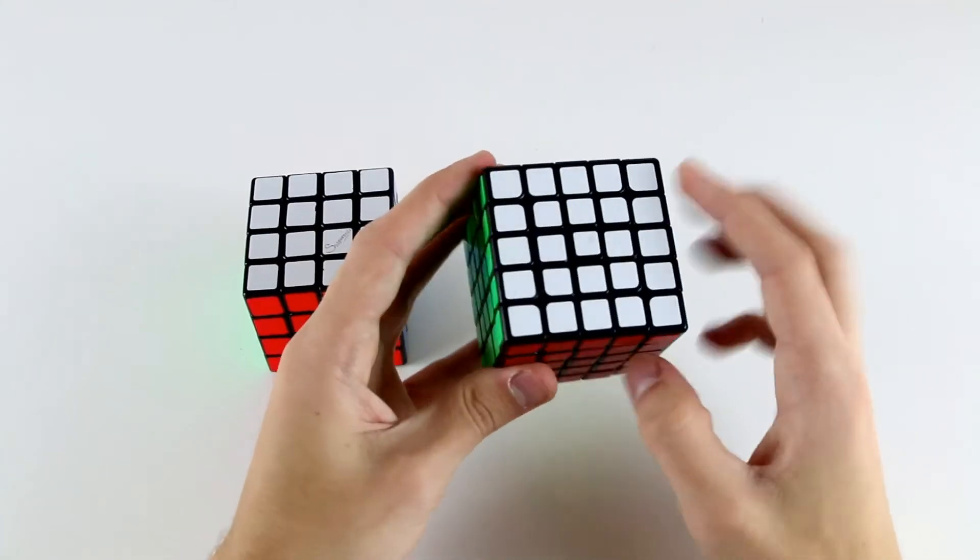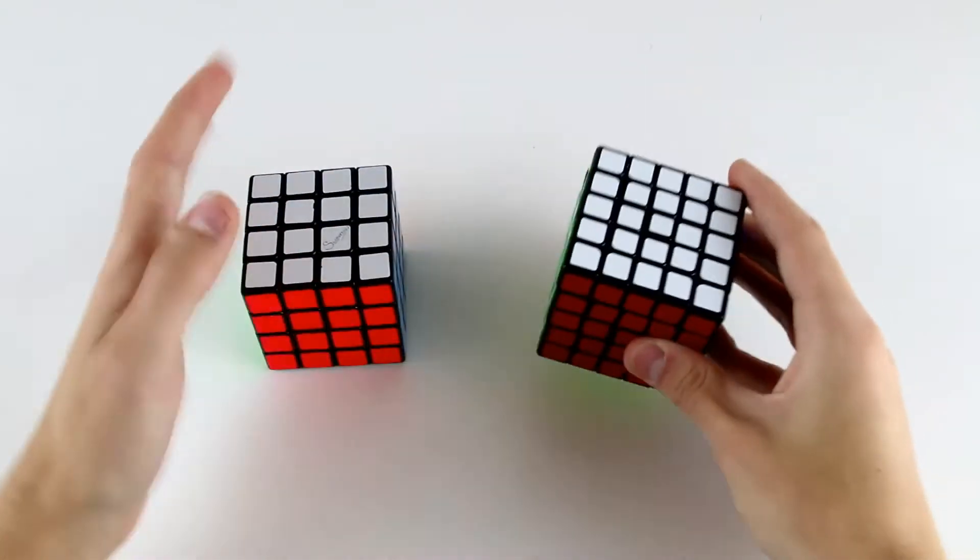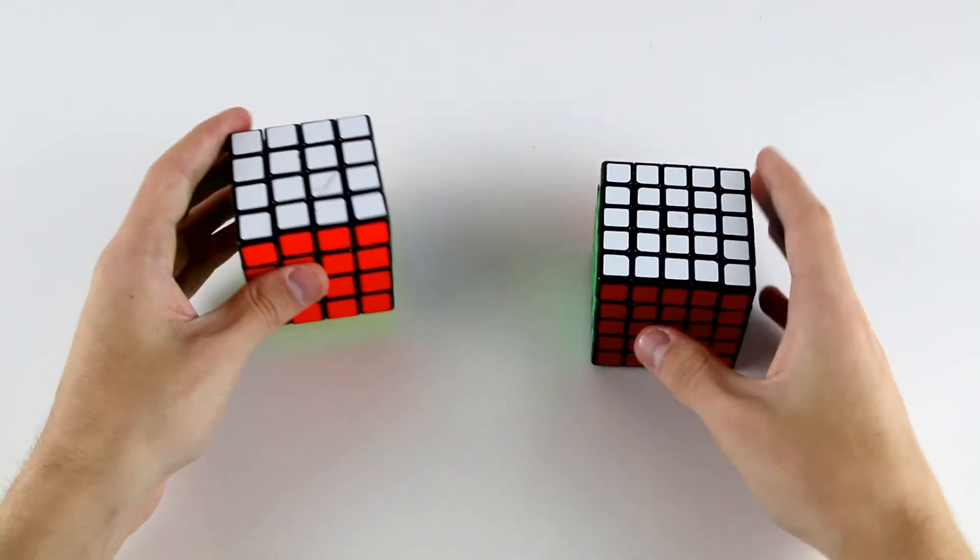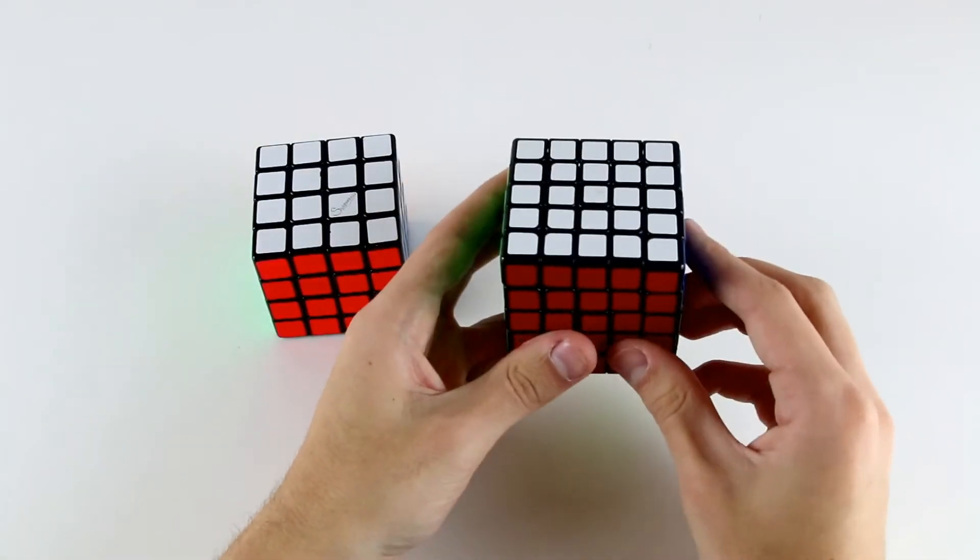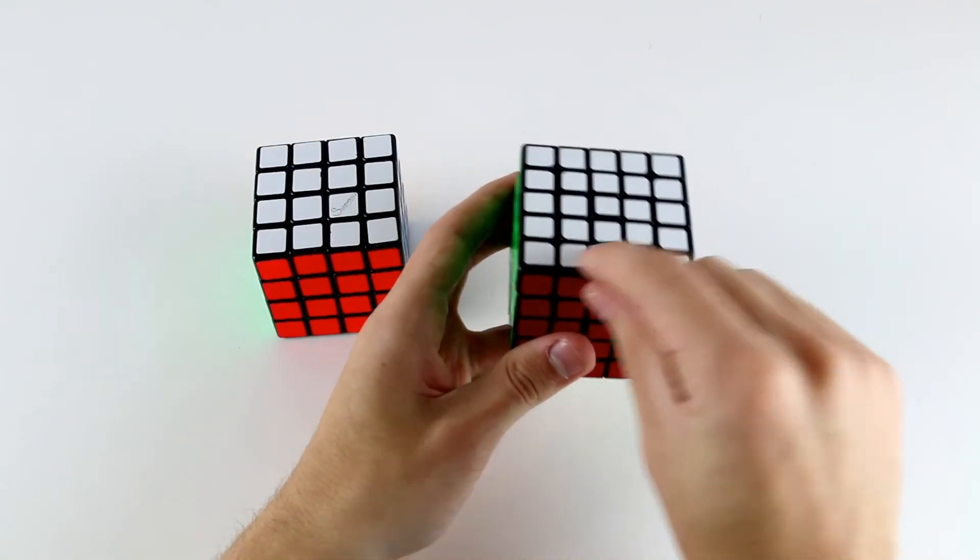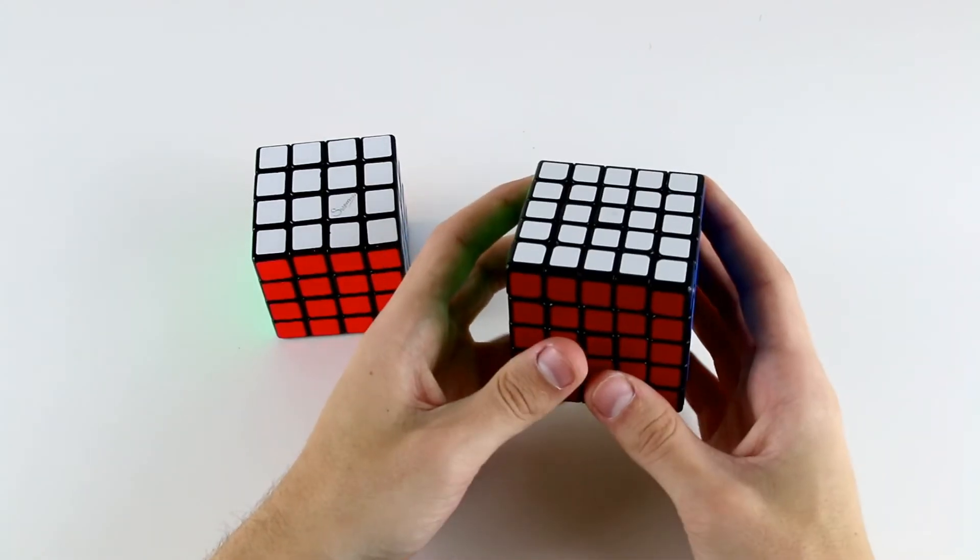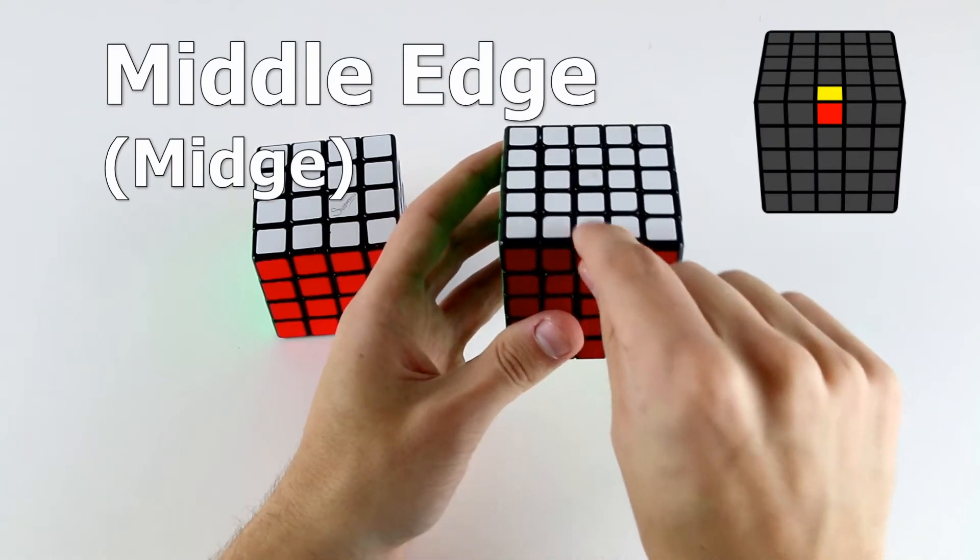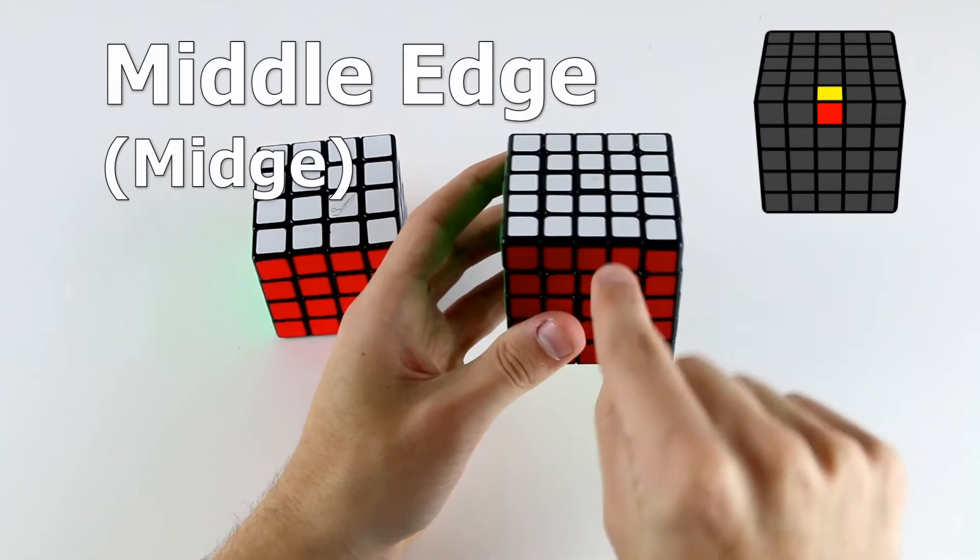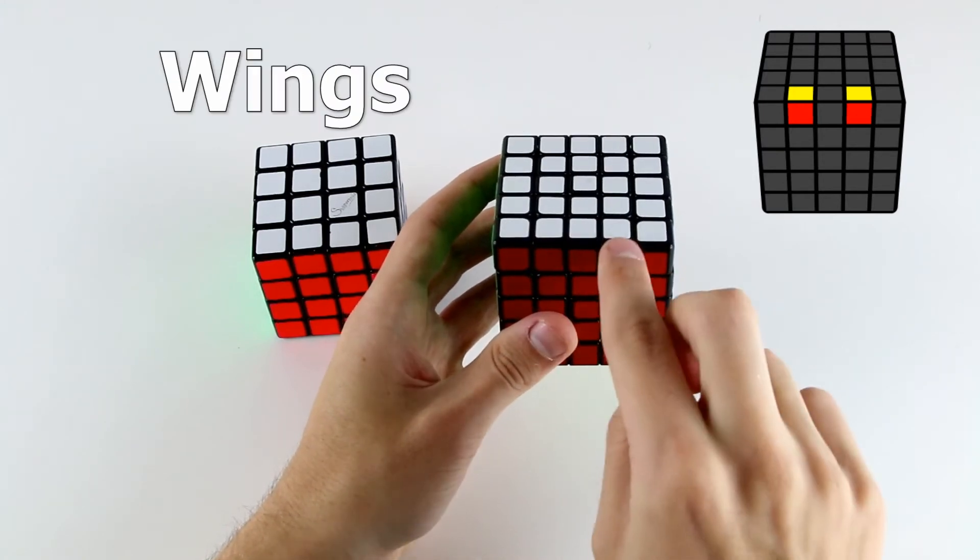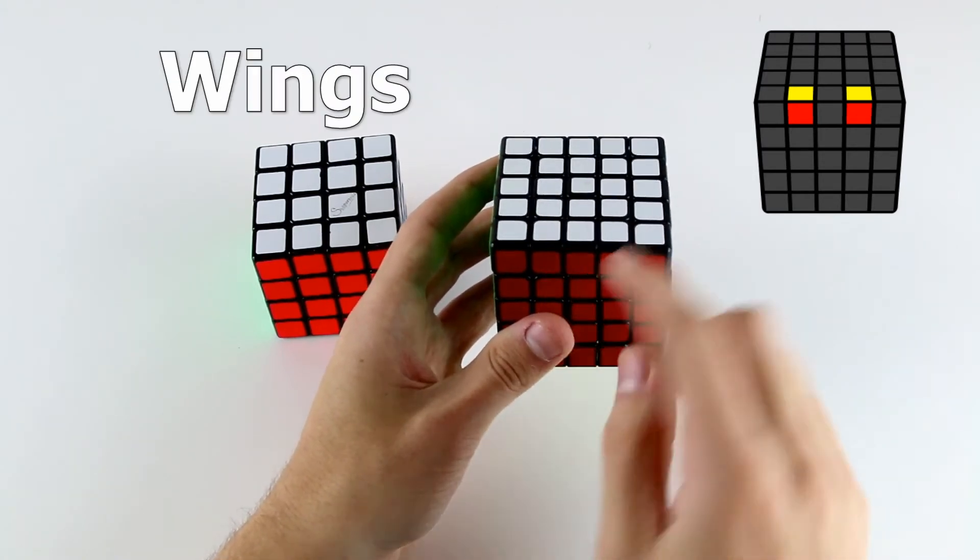After solving all of our center pieces, we need to then solve the edge pieces. On a 4x4 there were just two edge pieces that we needed to pair up together. However, on a 5x5 with the additional layer, we need to pair three edges together. There are two different types of edges we need to be aware of: the middle edges, which are known as midges, and then we have the wings. These two are the wings around the middle edge.